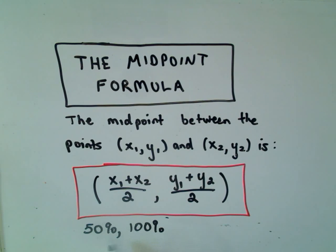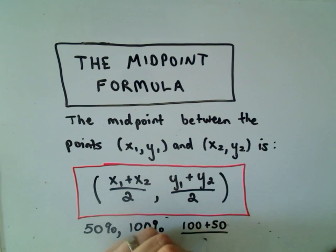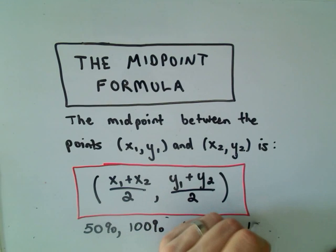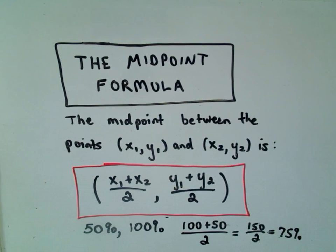Most people would say your test average is 75%, and normally when I ask them how you get it, they say, well, to average, you add the things together, and you divide by the number of them. So you have 150 over 2, or simply 75%. So, notice a midpoint is just an average of two things.